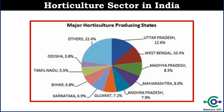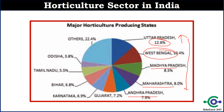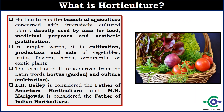If you analyze the horticulture produce data, you will find that Uttar Pradesh accounts for 12.6% of total horticulture produce and is at the top of that list. The second position has been taken by West Bengal, then Madhya Pradesh, then Maharashtra, and then Andhra Pradesh. You can remember these top 5 states in terms of horticulture produce — especially the top position, as this can be asked in your examination.